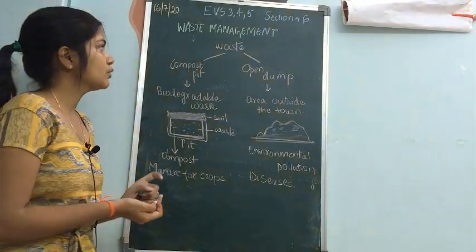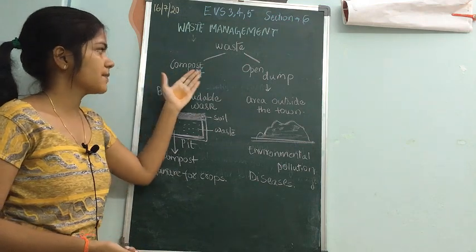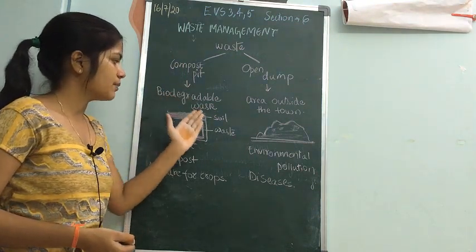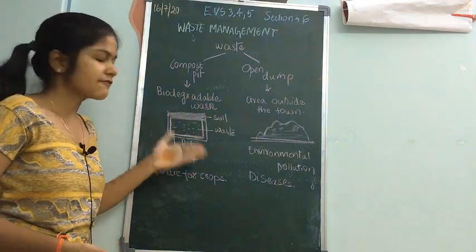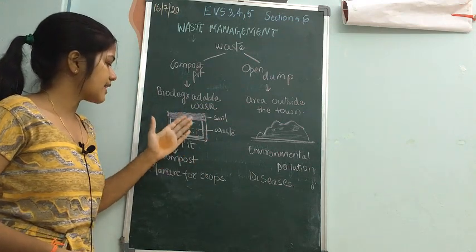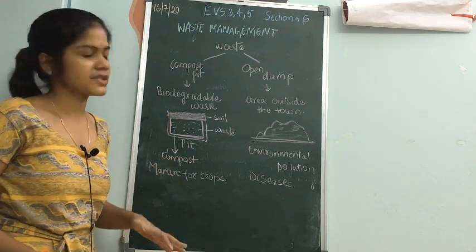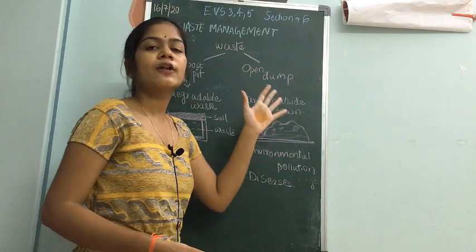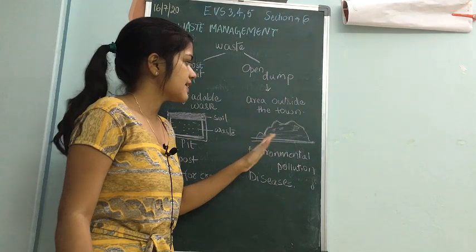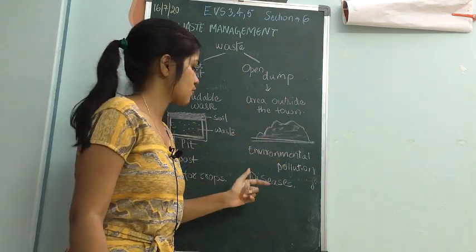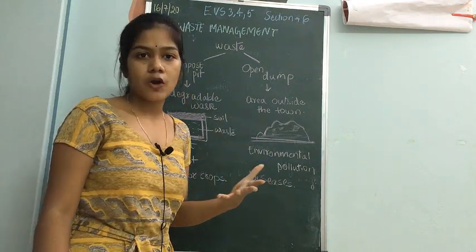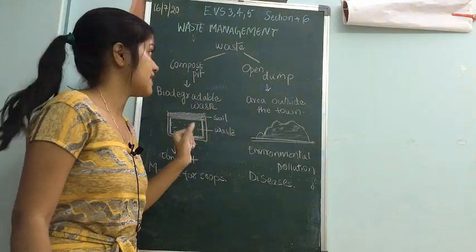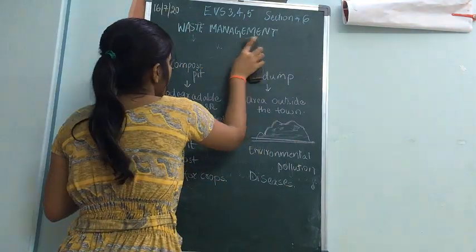To summarize waste disposal: the compost pit is used for biodegradable waste — you dig a pit, dump biodegradable waste in it, cover with soil, and after some time microbial activity converts it into compost used as manure for crops. The open dump is an area away from humans outside town where all waste is dumped in the open. This is not healthy because it causes environmental pollution and diseases like cholera, typhoid, and diarrhea. Now we'll look at the three R's for disposing of non-biodegradable waste.